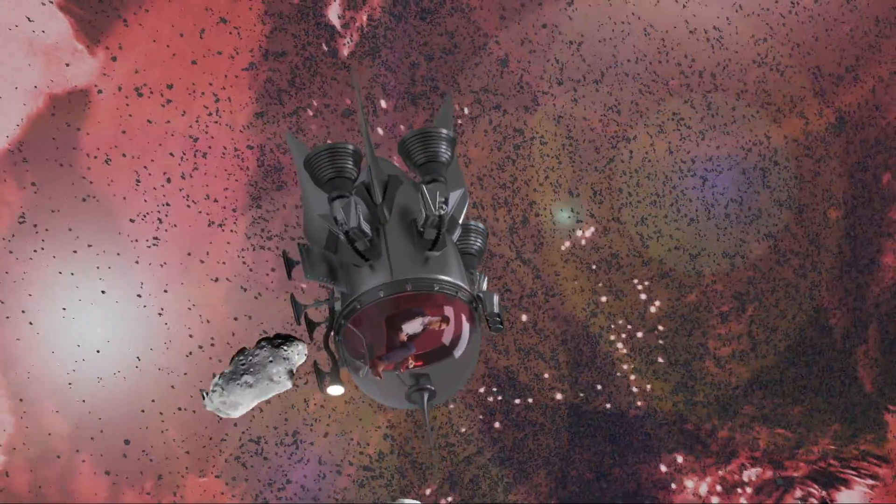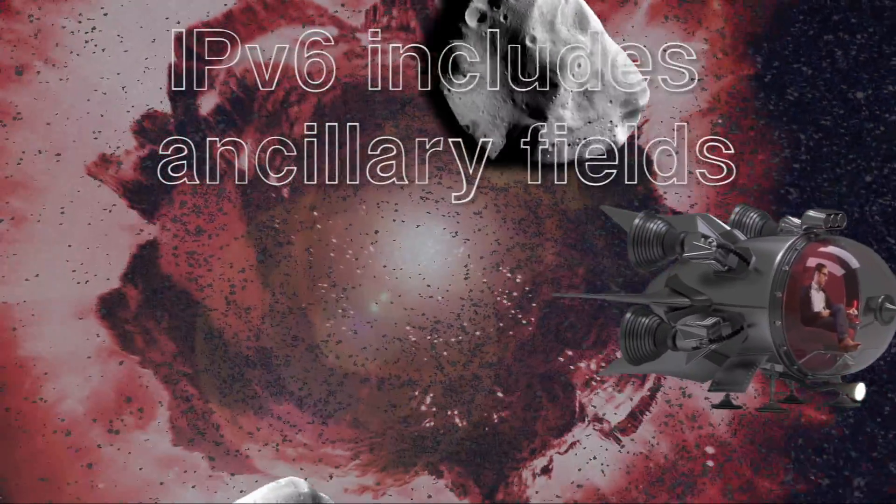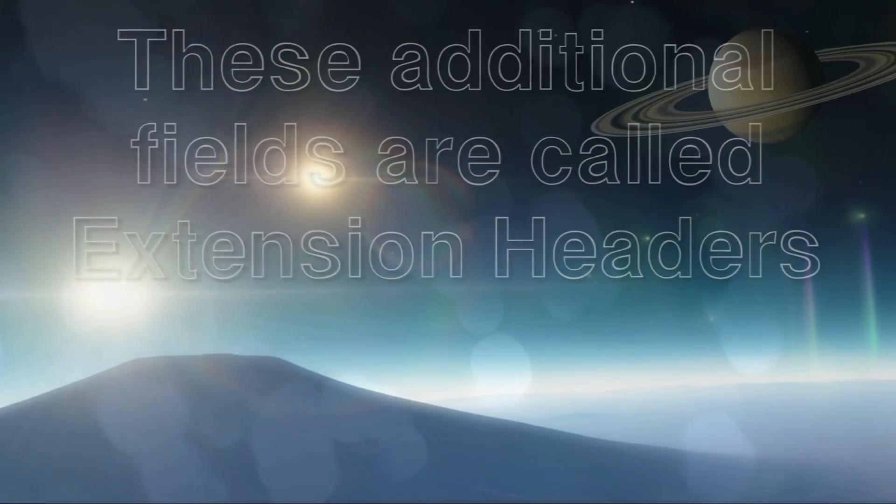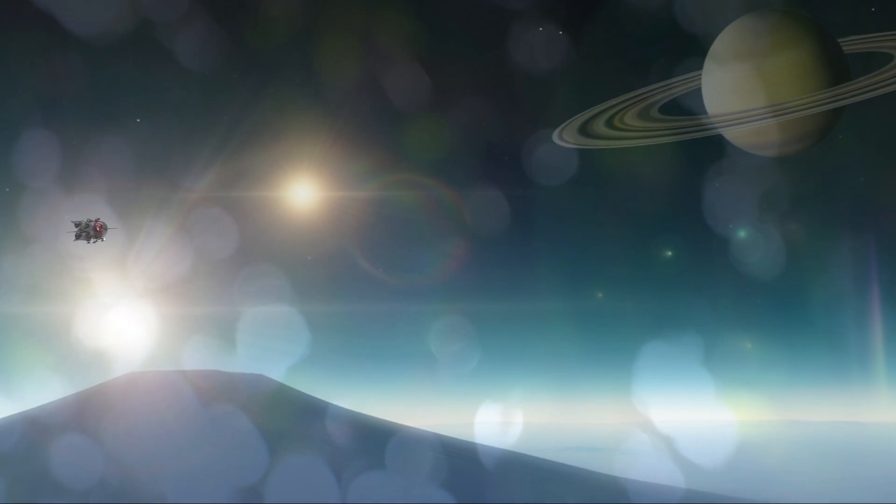Because this functionality has been extended to allow IPv6 to optionally include a number of ancillary fields that may be useful or even necessary as a packet moves across the network. These additional fields are called extension headers, and they share a common form. They each start with the type of the header that follows them,